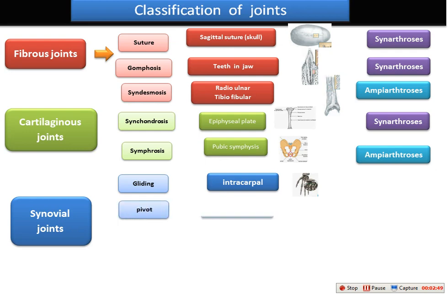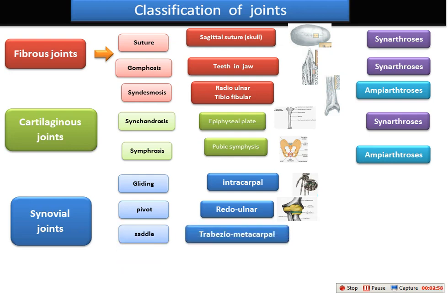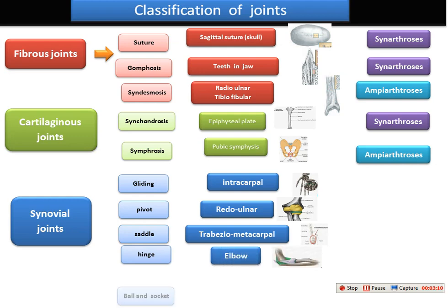We also have the pivot joint, found in the radio-ulnar joint. And we have what we call the saddle joint, found especially in the trapezio-metacarpal bone. We also have the hinge joint, found in the elbow. And we also have the ball-and-socket joint, found in the hip joint.